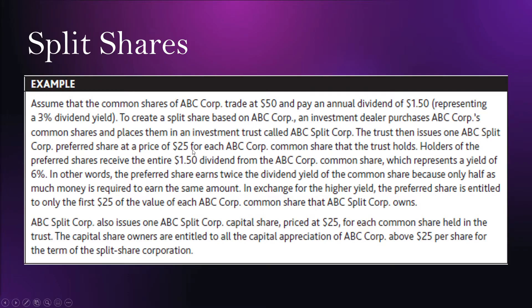The preferred share is priced at $25 and you still get the entire dividend of $1.50, which increases the yield to 6% — a pretty good benefit. The capital share is also $25 and will gain all of the capital appreciation. So if the stock went from $50 to $60, the capital share will go from $25 to $35. It's a nice way to divide the share into two investment objectives: if you want more income you buy the preferred split share, and if you want growth you buy the capital share — with capital gains taxed at the lowest rate.